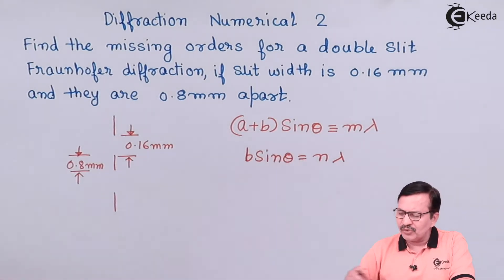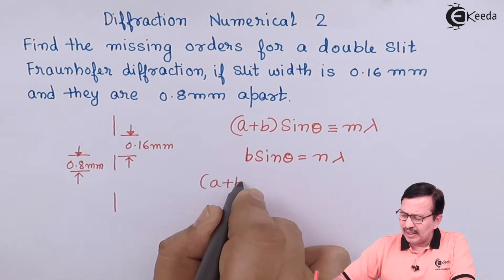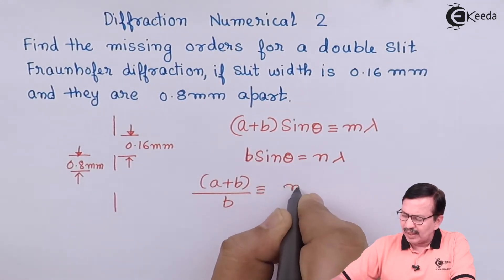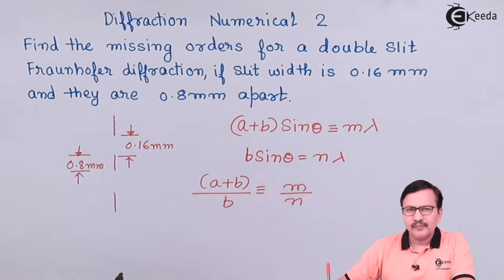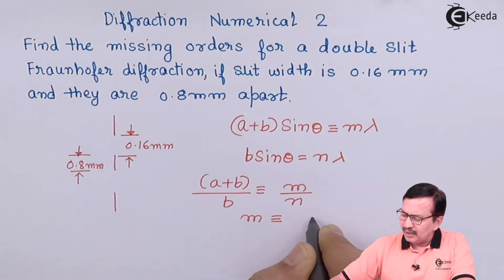We can now use these particular expressions to find out the missing orders. Let us take the ratio of this. So this is going to be equal to a plus b upon b is equal to m upon n and therefore your m is equal to n into a plus b upon b.